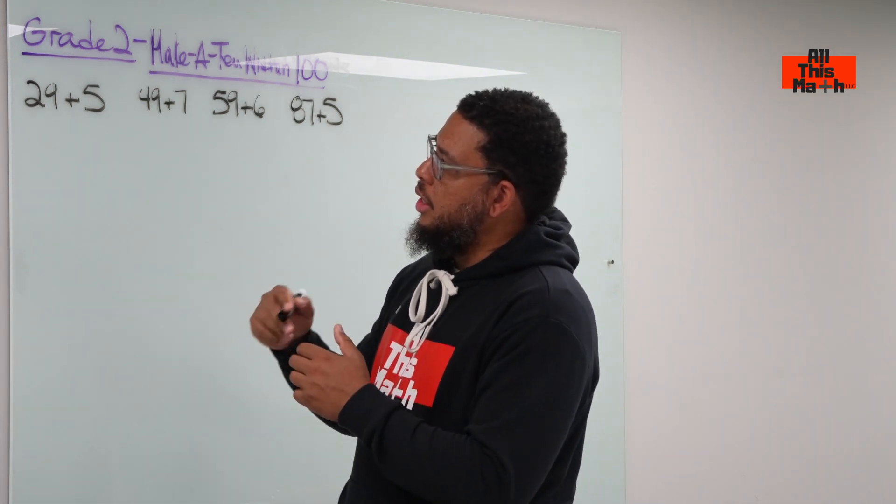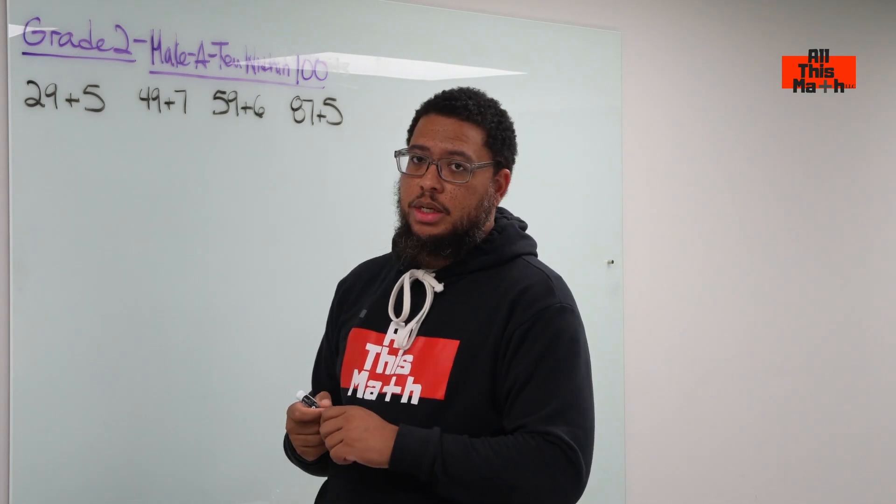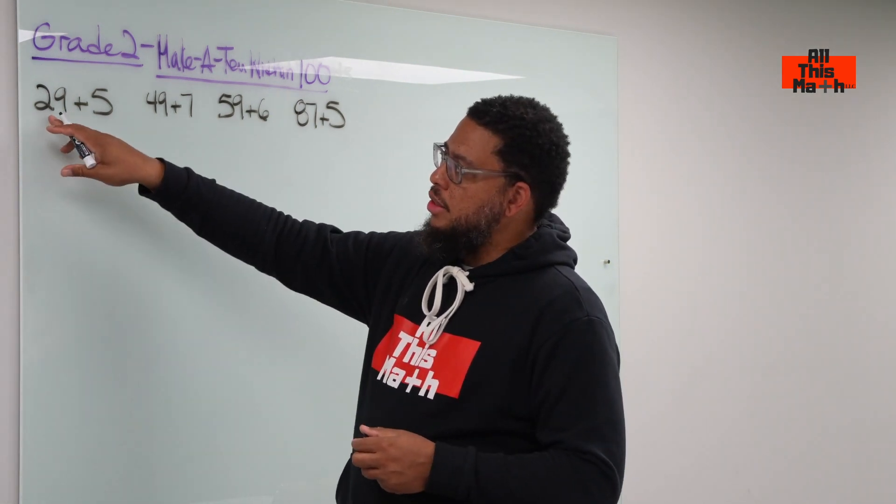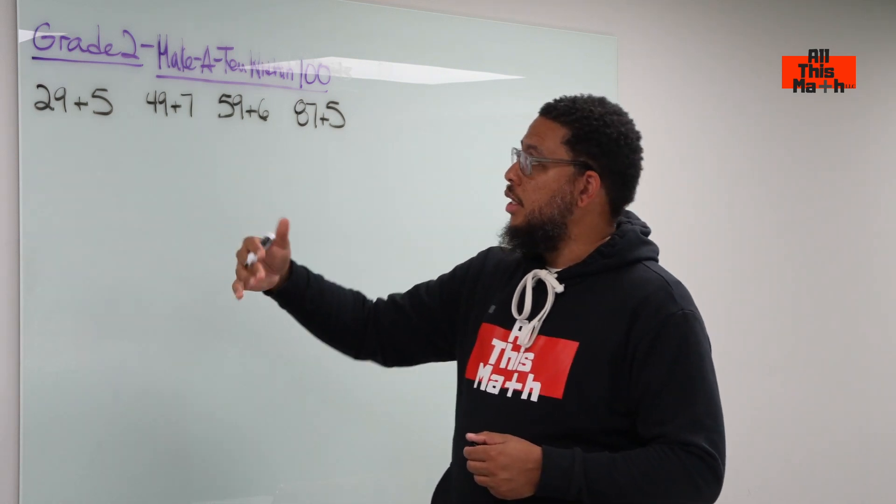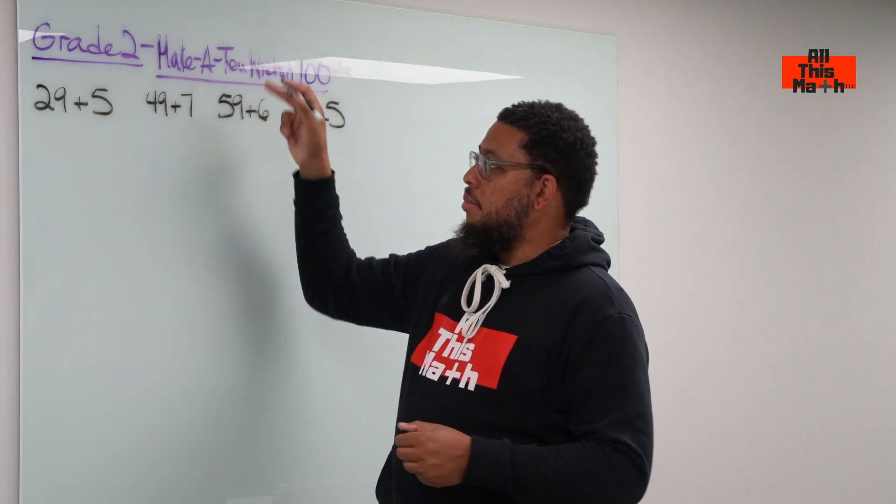So the closest number that ends in 0 that's a multiple of 10 to 29 would be 30. We want to basically make this 29 become a 30. And 30 is a multiple of 10, so it still satisfies the make a 10 method.